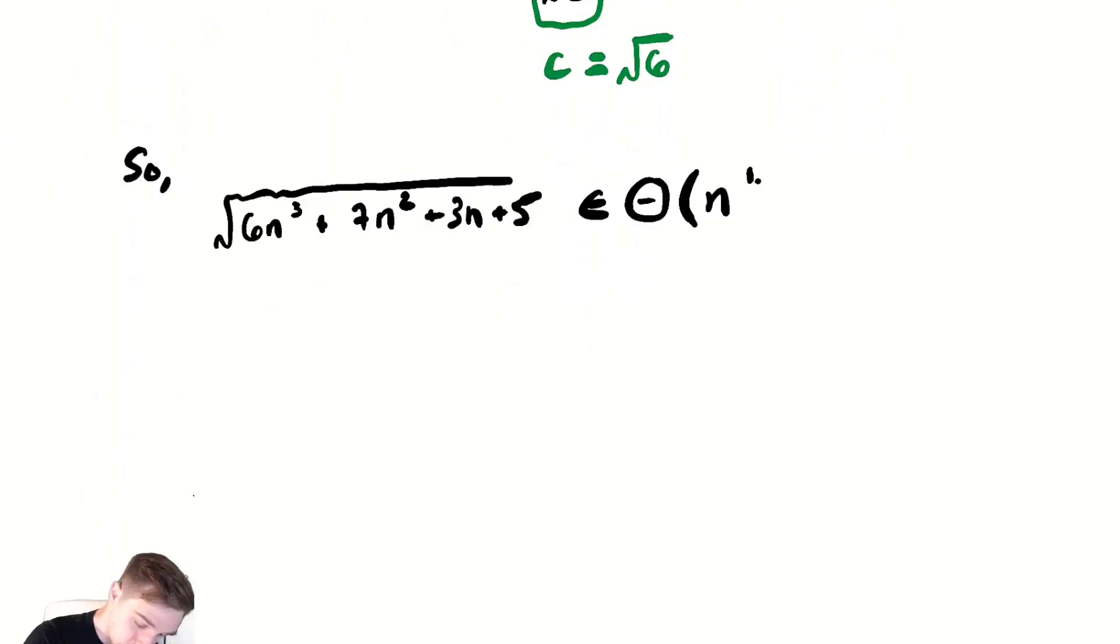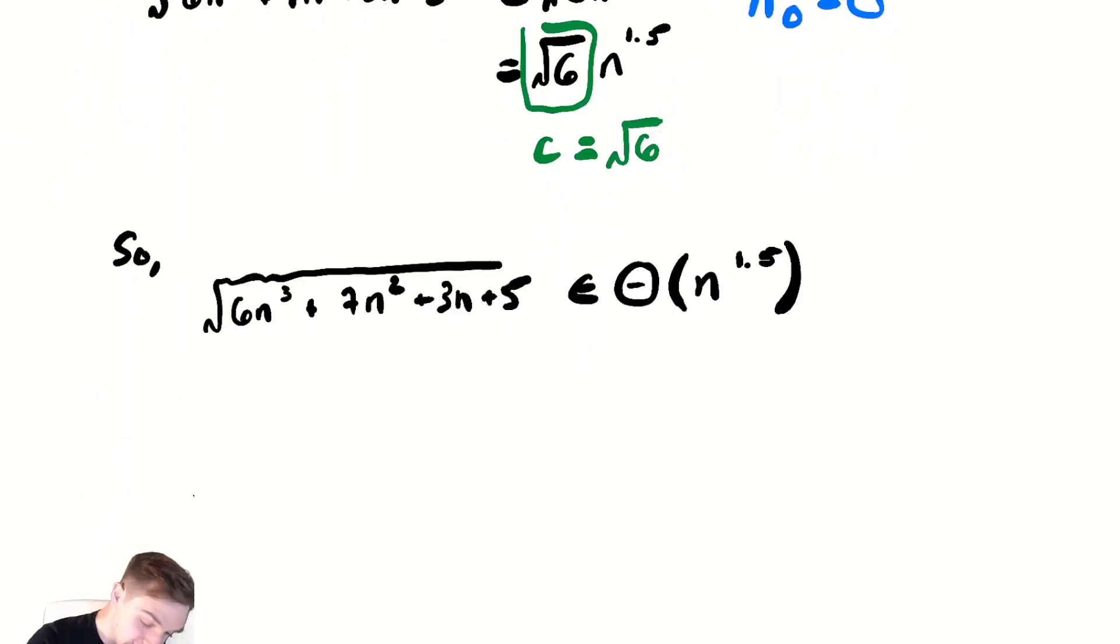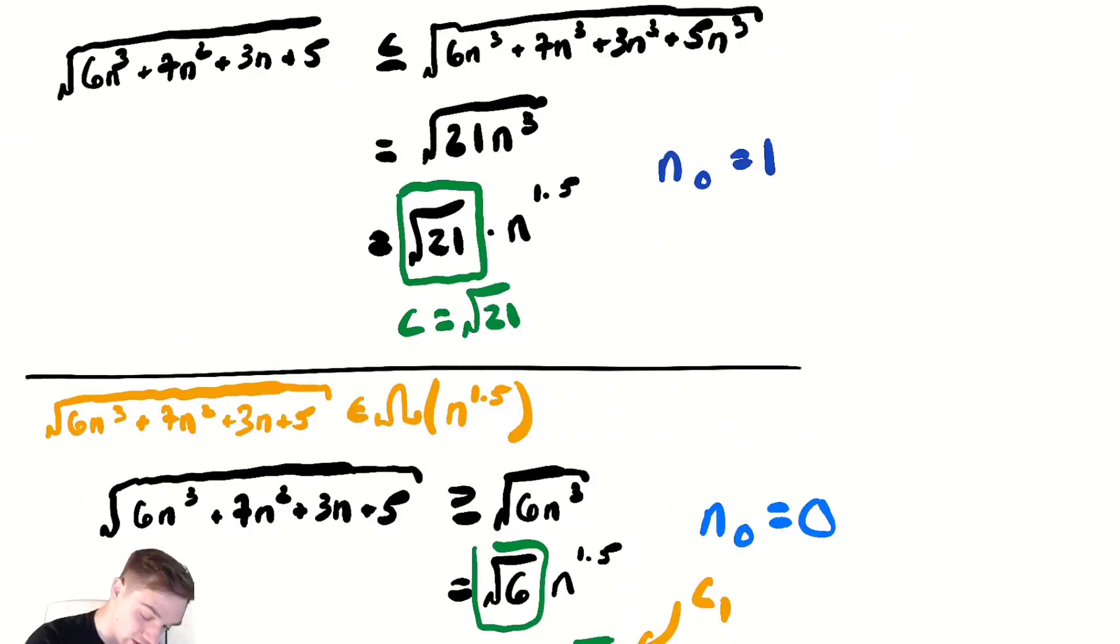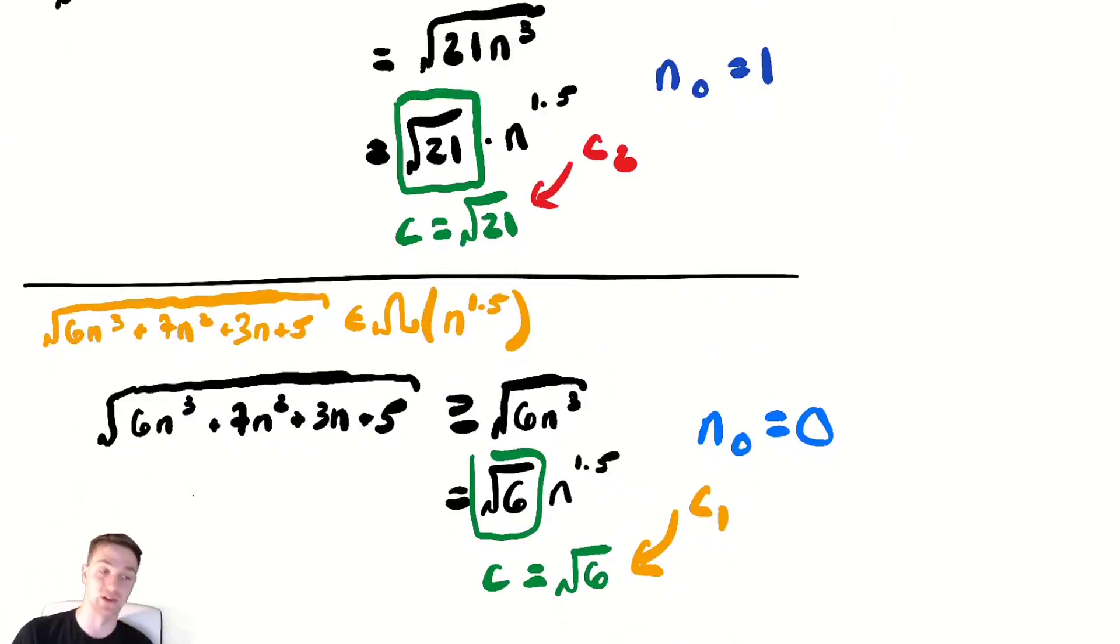If we wanted to morph this to show the exact definition of theta, we could make some minor adjustments which I will comment on here. I could have called this c₁ and I could have called this thing here c₂, and then chosen the largest value, the maximum between the n₀s that I found. So I could choose n₀ equals 1 and c₁ equals √6 and c₂ equals √21. That would be directly from the definition, but as we already mentioned, showing it is in big O and it is in big omega...